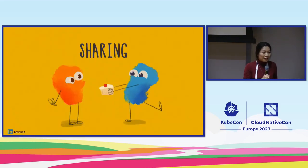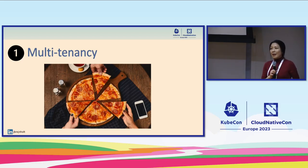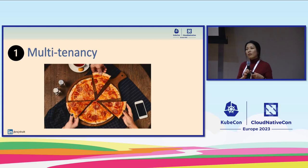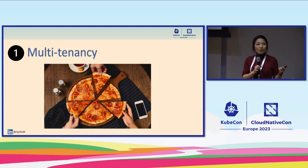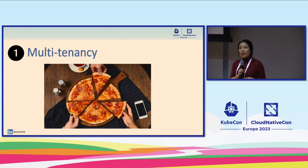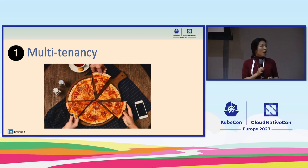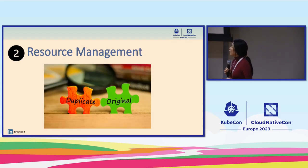My favorite Kyverno features start with multi-tenancy. When we onboard a new team, many things need to be set up: RBAC access for service accounts, resource quotas for each namespace — all of these are a bundle. You don't want to create them one by one, and Kyverno is a perfect candidate to automate that. You could also define your own Helm chart to distribute on every new namespace, but Kyverno handles this natively.